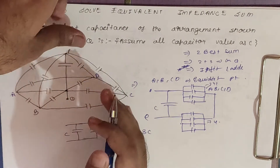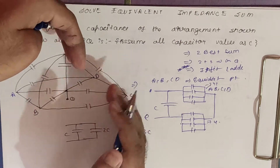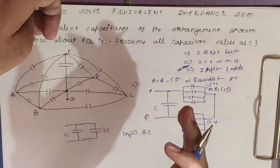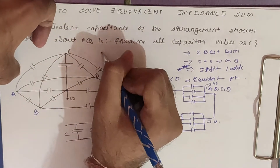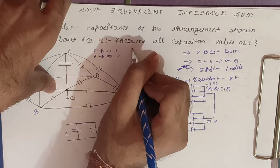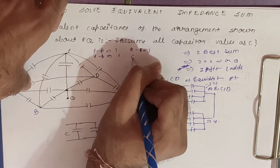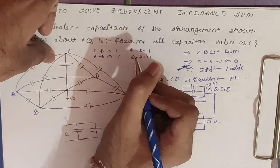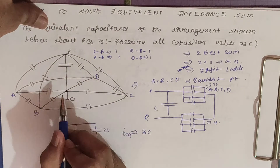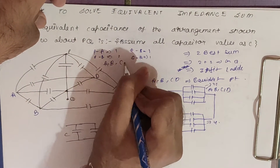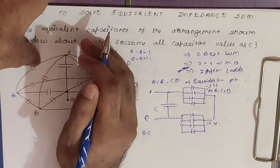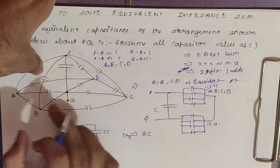Mark all nodes A, B, C, D where more than one capacitance meets. Calculate each node's distance from the start point P and destination point Q. P to A is one capacitance, P to B is one capacitance; Q to A and Q to B are also each one capacitance — so A and B are equidistant points. Similarly, B and C, and C and D are equidistant. All four points A, B, C, D are equidistant to each other.